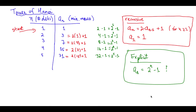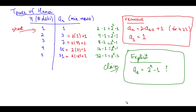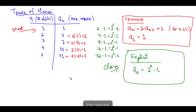Hello pre-calculus students and general seekers of truth in particular. We will now start and finish our proof for the explicit formula of the minimum number of moves needed to solve the Tower of Hanoi. This is our claim: the explicit formula for the minimum number of moves required to solve the Tower of Hanoi with n disks satisfies the equation 2 to the n minus 1.